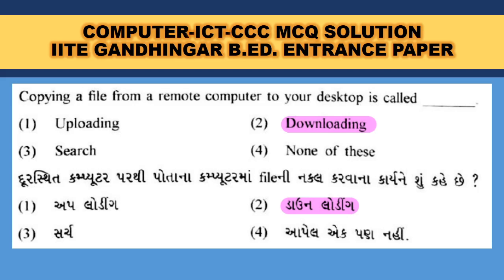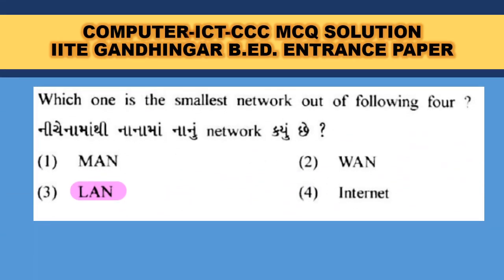Copying a file from a remote computer to your desktop is obviously called download — when you download a file, it comes from another computer on the internet. Which one is the smallest network? LAN — Local Area Network — it is related to a small building or small office. A Metropolitan Area Network is related to a metropolitan town. Wide Area Network is bigger than a town, and Internet is an interconnected network.